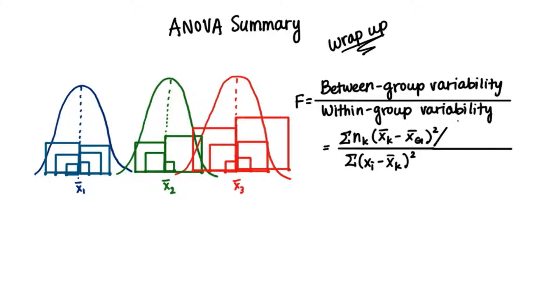And then we have to find the average sum of squares for each by dividing by the degrees of freedom. In the case of the between-groups, this is the number of samples minus 1. And for within-groups, this is the total number of values minus the number of groups. This is the same as adding the degrees of freedom for each group.